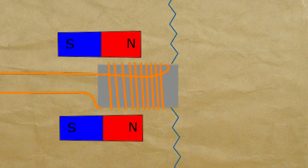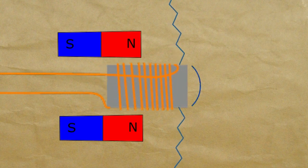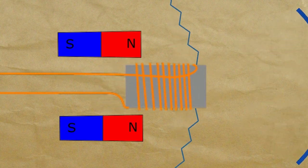If a current is applied to the copper coil, then it will move inside of the magnet and act as a speaker.